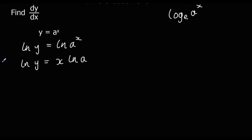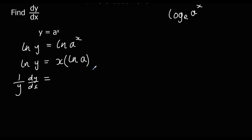Now we're going to differentiate this implicitly. We differentiate ln y with respect to x — if we differentiate it normally we get 1 over y, and then we times by dy/dx. On the right we've got x ln a. Remember ln a is just a number, so it's like differentiating 2x, which would be 2, or 3x, which would be 3. So differentiating x ln a just gives ln a.